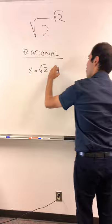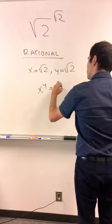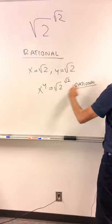But then x to the y, which is square root of 2 to the square root of 2, is assumed to be rational. So in that case, we would be done.